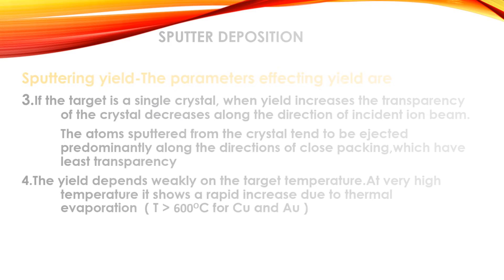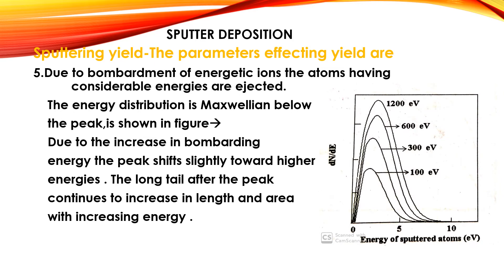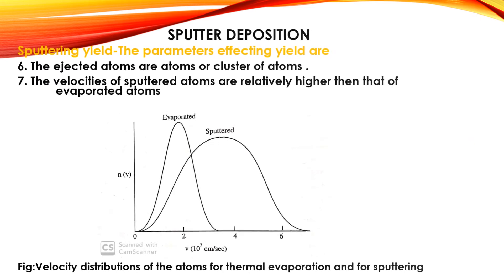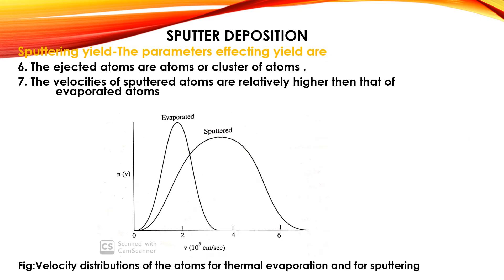The fifth parameter: upon bombardment with energetic ions, the atoms ejected have considerable energies. The energy distribution is sub-Maxwellian below the peak, as shown in the figure. With increasing bombarding energy, the peak shifts slightly toward higher energies, and the long tail after the peak continues to increase in length and area. The sixth parameter: the ejected atoms are neutral atoms. The seventh parameter: the velocities of sputtered atoms are relatively higher than those of evaporated atoms, as represented in the graph.